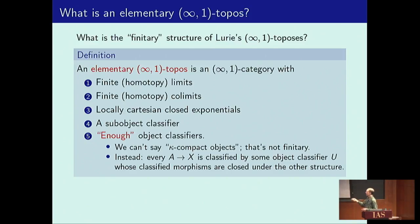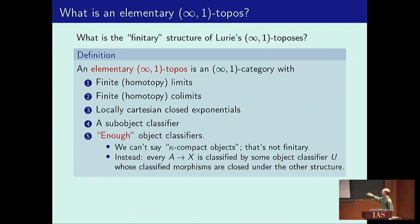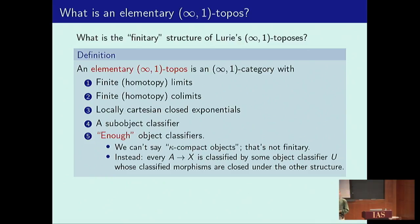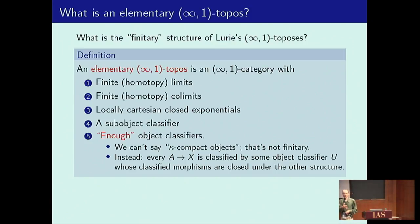Saying it the way Lurie and Rezk did is not elementary because it talks about regular cardinals. What we can do instead is ask that for every family of objects over X, there's some object classifier which classifies this morphism, and we want this to be big enough — closed under the other extra structure. This is essentially a categorical way of talking about universes in the type-theoretic sense. The elements of a universe in type theory are not all types, but a collection of small types closed under sigmas and pis and so on.